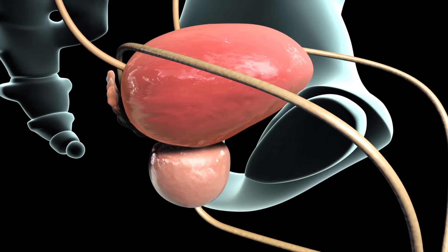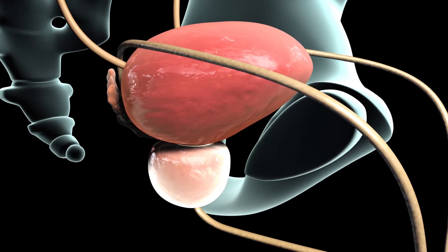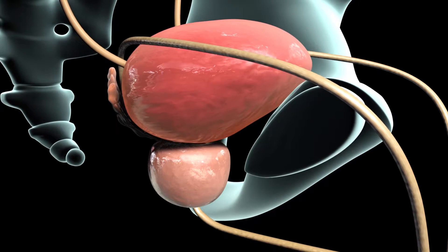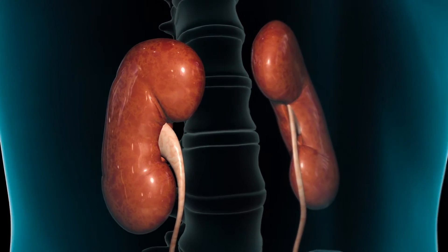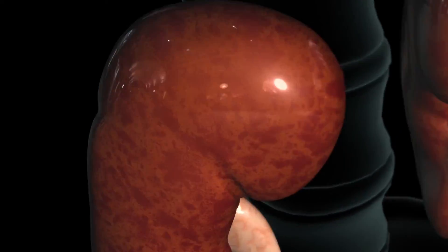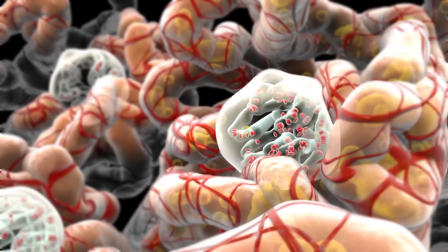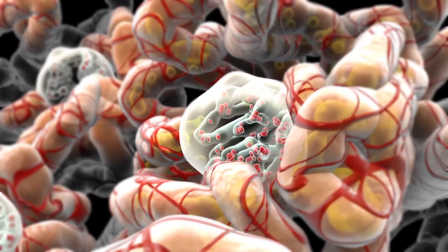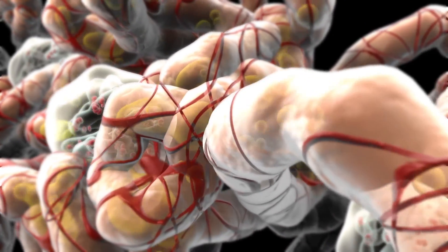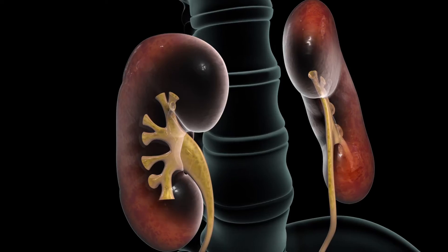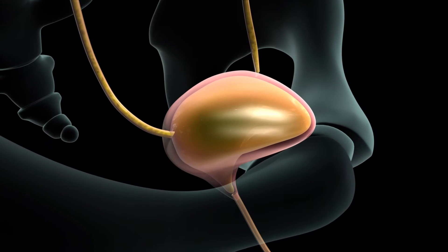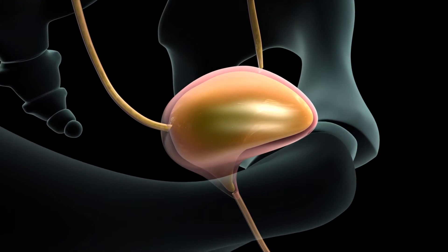In men, the prostate gland wraps around the urethra at the base of the bladder. As blood circulates, it passes through the kidneys, where wastes and extra fluids are removed to create urine. The urine then moves down the ureters to be stored in the bladder, an expandable balloon-shaped muscle.